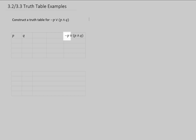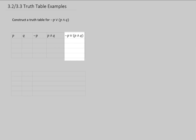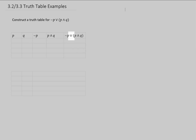The statement has a not P in it, so we're going to need a column that includes not P. Using order of operations, we're also going to have to find P and Q, so we should have a column for P and Q. Finally, to fill out our last column, we will be comparing the not P column to the P and Q column using this OR.